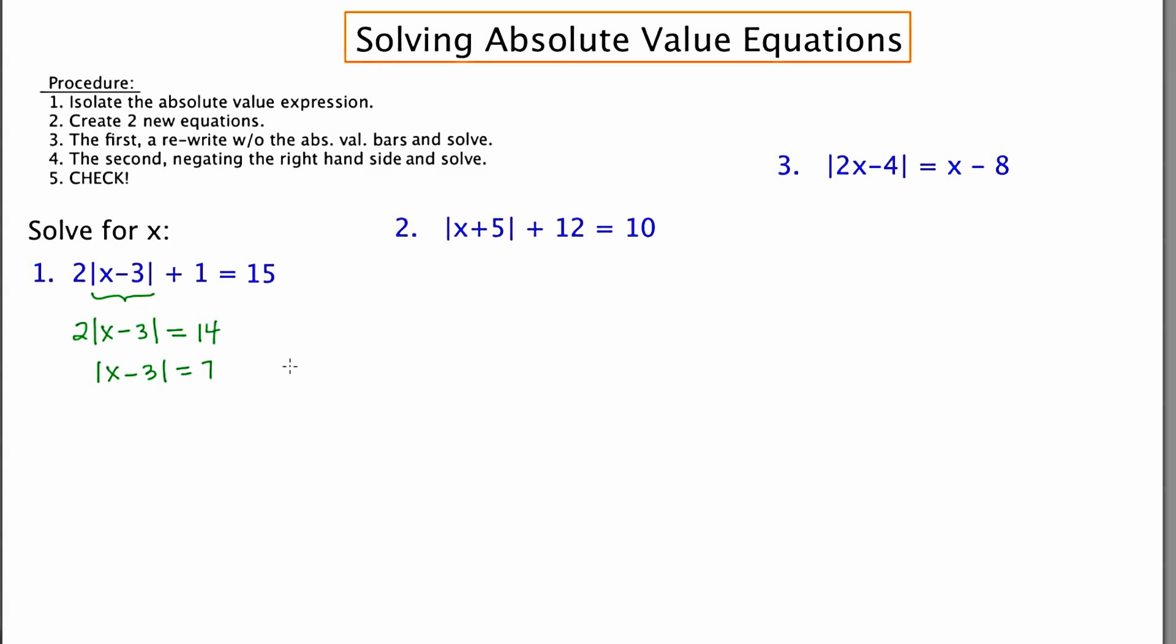Now the absolute value expression is isolated. It's at this time that I'm going to make my two equations, and I like to denote that with these arrows. The first will be x - 3